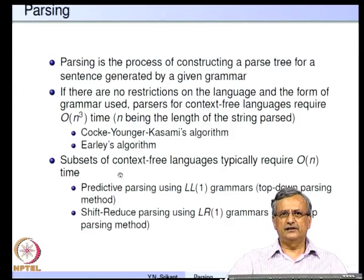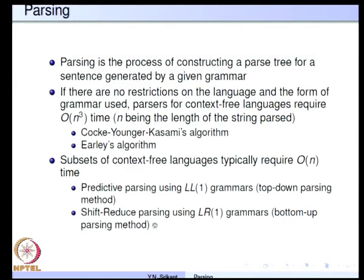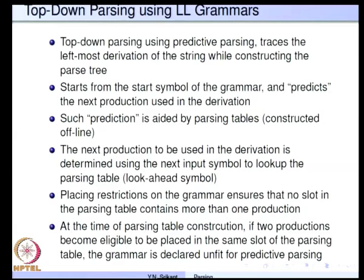We are interested in subsets of context-free languages that can be parsed in O(n) time, whereas general context-free languages require O(n^3). Two parsing strategies of interest are predictive parsing, based on LL(1) grammars and top-down parsing, and shift-reduce parsing, based on LR grammars and bottom-up parsing. Let us study top-down parsing in more detail and then move on to bottom-up and LR parsing.